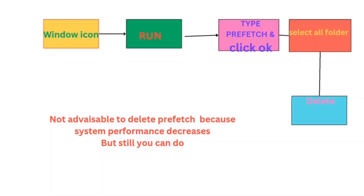In the Windows icon select Run. Type 'prefetch' and click OK, then select all the folders and delete. Note that prefetch cleanup is not advisable because system performance may decrease temporarily, but you can still perform this function to free up disk space. Windows will automatically regenerate prefetch files as needed. Prefetch files are temporary files that Windows uses to store information about frequently used programs to speed up their loading time.